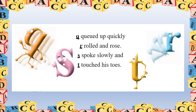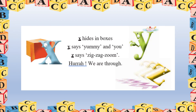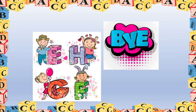Q queued up quickly, R rolled and rose, S spoke slowly and T touched his toes. U uses an umbrella, V has a violet van, W washes windows whenever he can. X hides in boxes, Y says yummy, Z says zig-zag zoom — hooray, we are through! Very good! That's all. Bye! Keep on practicing. See you!